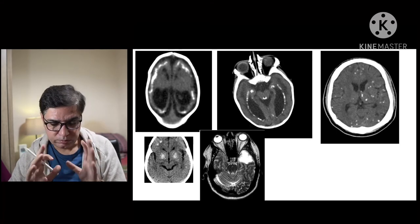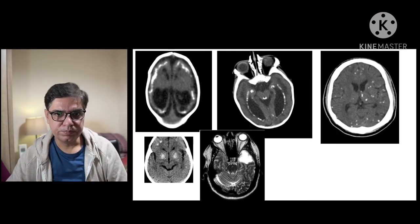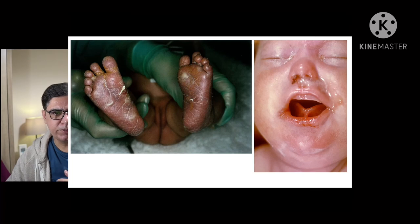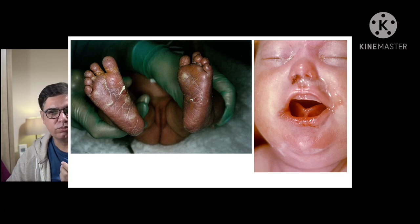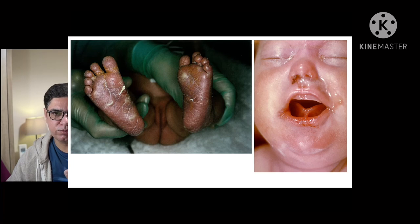Here is an image showing the soles of a child with desquamation — a desquamating rash in a newborn is very typical of congenital syphilis. On the right side, the image shows thick, bloody mucoid discharge coming from the nostril — snuffles — which in a newborn is equivalent to congenital syphilis unless proven otherwise.